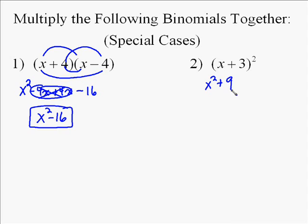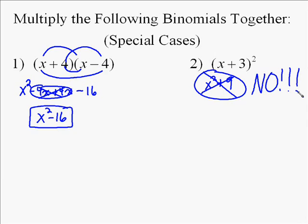The other is when you've got something squared, x plus 3 squared. It is not, never will be, x squared plus 9. Very common mistake. Don't do it. You cannot just square both terms inside the parenthesis. What you have to do is you have to write it out like it's a multiplication problem.